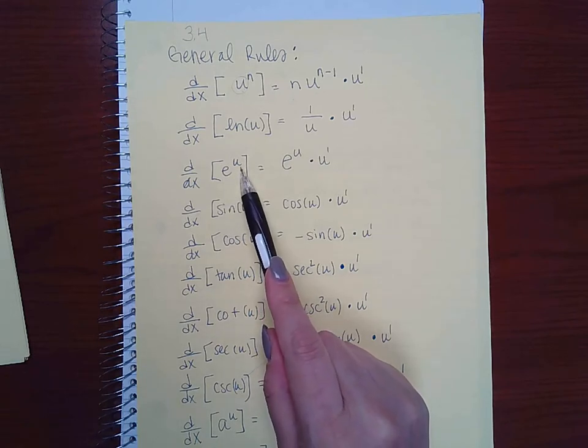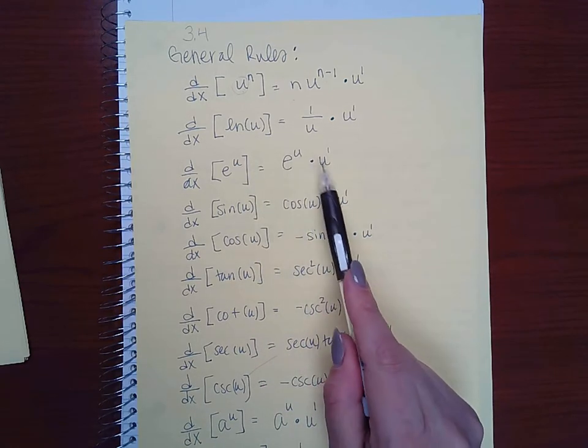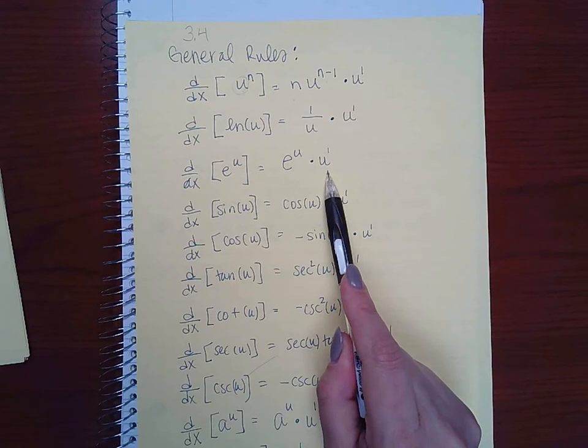You still get e to that same exponent, but you have to multiply by the derivative of that exponent.